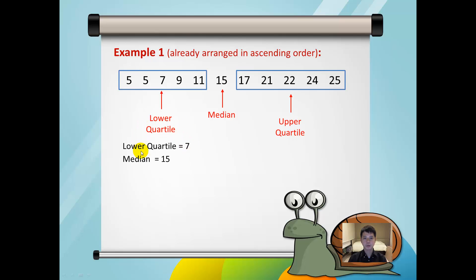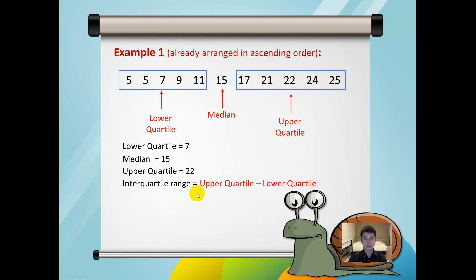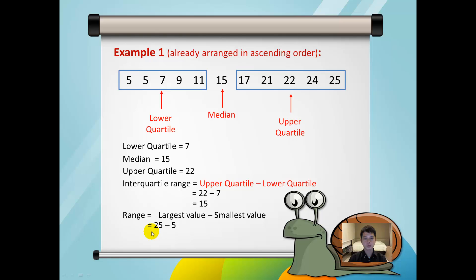The lower quartile is equal to 7, the median is 15, and the upper quartile is 22. The interquartile range is defined by the upper quartile minus the lower quartile, so it is equal to 22 minus 7, which equals 15. The range is the largest value minus the smallest value, equal to 25 minus 5, which is equal to 20.